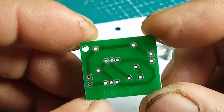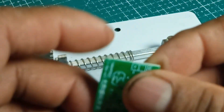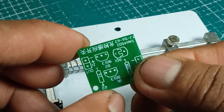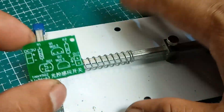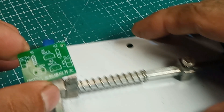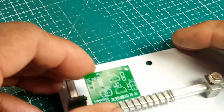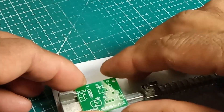And now here is our topic. A photocell using an LDR light dependent resistor works based on the principle that the resistance of the LDR changes with the intensity of light falling on it. Here's a detailed explanation of how it functions.